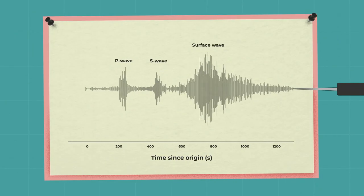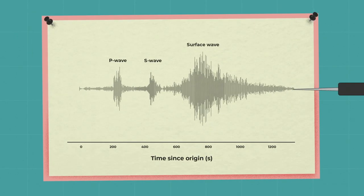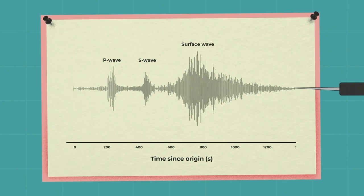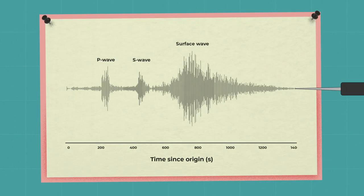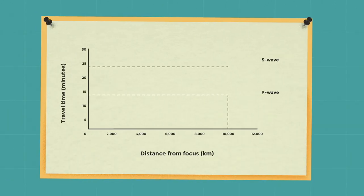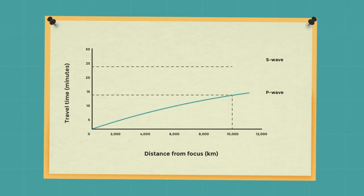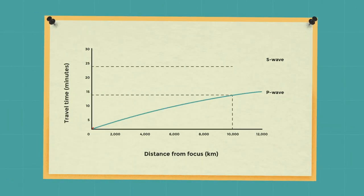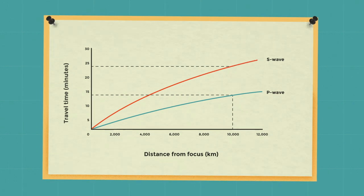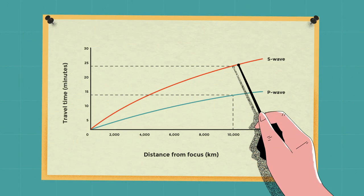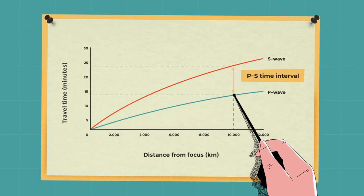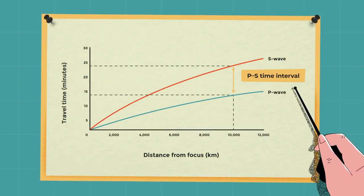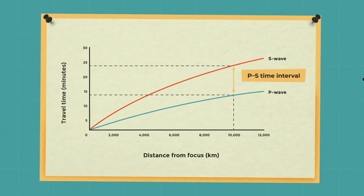The waves are detected and recorded using a seismometer to create a seismogram. Seismologists can determine how far away the earthquake struck by plotting the difference in the time of arrival between the P and S waves on a graph.